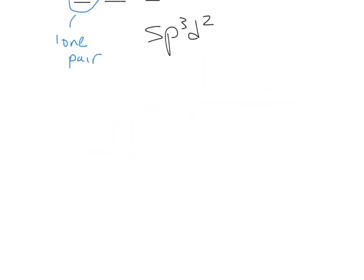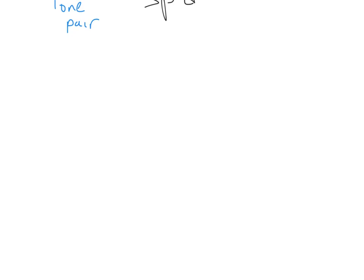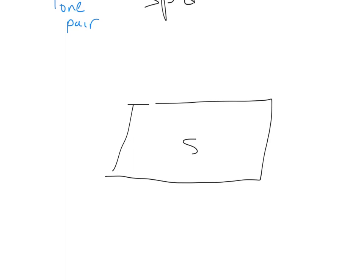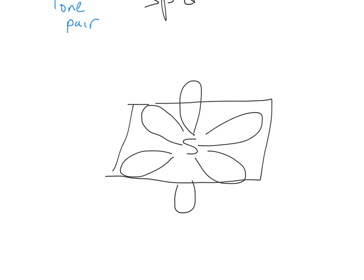The next step is to draw it. Since there are 6 groups of electrons, you're going to draw the octahedral geometry. Make your square a little bit skewed, put sulfur in the middle, and you have 6 positions — one underneath the plane. Each of those is SP3D2 and you want to label it that way. Then there's 1 lone pair — put it down here, just make the 2 electrons. Now you can see the name of the shape: it's the square pyramid.